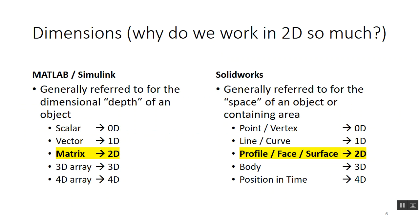We want to start off talking about dimensions. We've talked a lot in MATLAB and Simulink about different dimensions and sizes of things — scalars being zero-dimensional, vectors one-dimensional, matrices in two dimensions, images and 3D arrays. In SOLIDWORKS and more generally in geometric modeling programs, a point or vertex is a good zero-dimensional thing, a line or curve is one-dimensional.